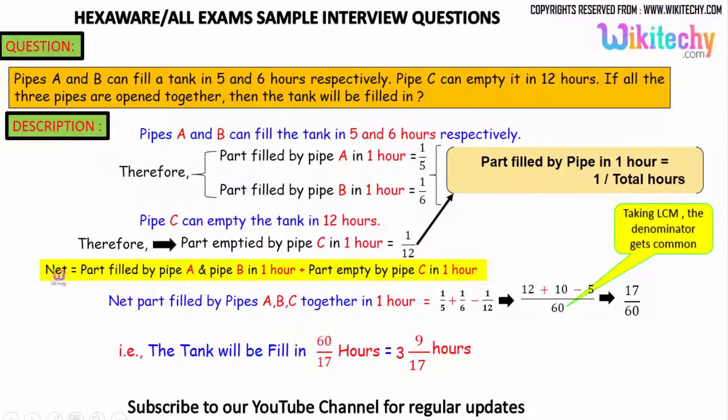So, the net filling up of the tank is equal to part filled by pipe A and pipe B in 1 hour, plus—it is not plus, it is minus—part emptied by pipe in 1 hour. This one is minus, sorry.